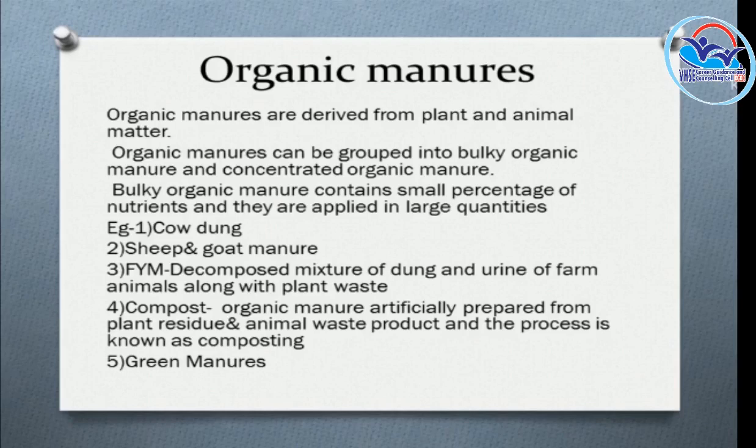Organic manure contains nitrogen, phosphorus, and potassium. Types of organic manure include: cowdung, chanagam, sheep and goat manure, farm yard manure, and compost.